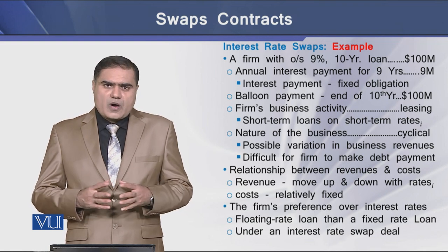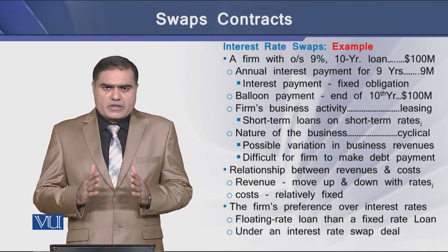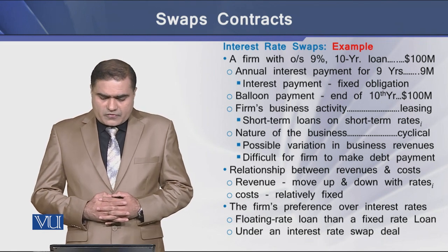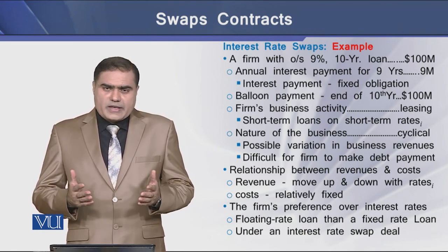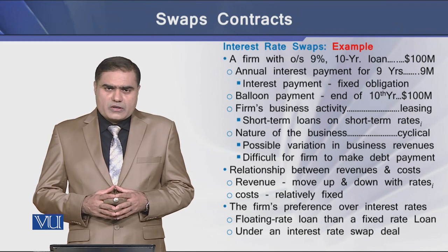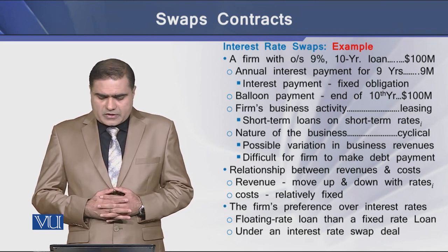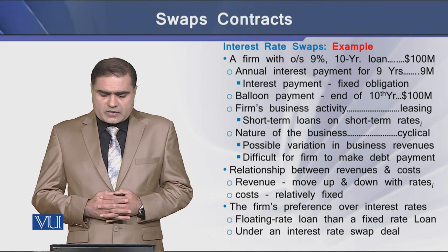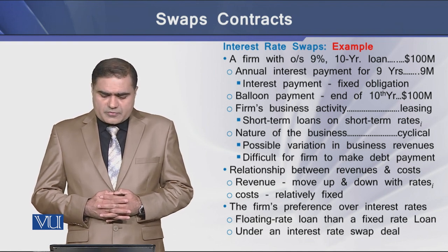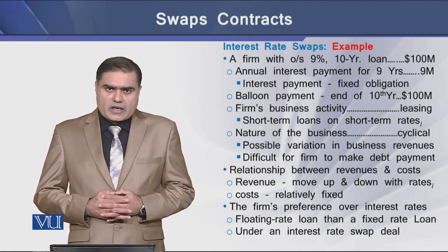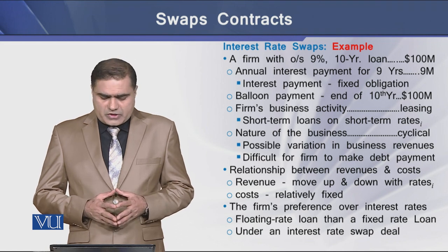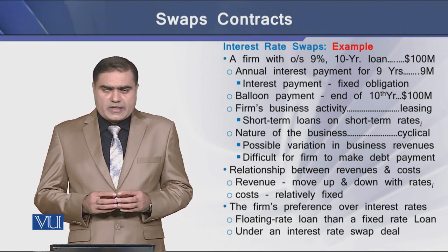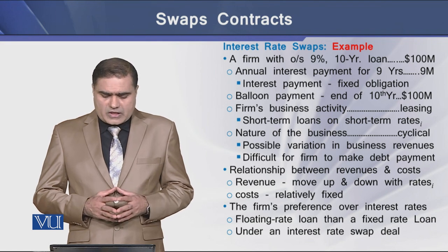Now let's see how interest rate swaps work. We have an example. We have a firm with outstanding debt of $100 million bearing a 9% rate of interest with a maturity of 10 years. The annual interest payment for 9 years is $9 million per year, which means that this interest payment is a fixed obligation for the firm.